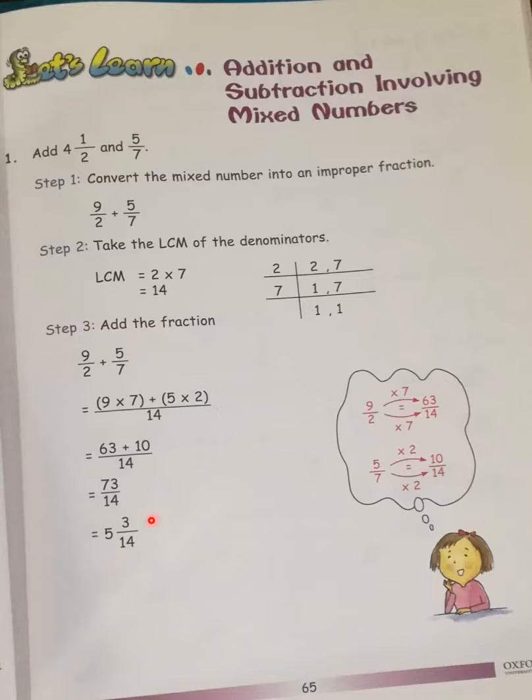Now 73 over 14, we need to do short division. You can see here. When we divide 73 by 14, this will not be complete. It will leave a remainder. If we multiply 14 by 5, we will get 70. 14 times 5 is 70. So 5 will be the whole number. 3 will be the remainder. The remainder will be the numerator, and the denominator will remain the same. So the answer will be 5 3/14. Got it?